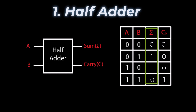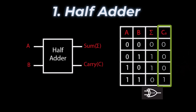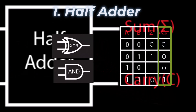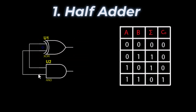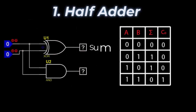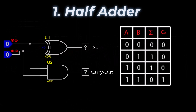By observing the truth table, the sum output is the same as the XOR function, and the carry output equals the AND gate. So a half adder is designed by combining an XOR gate and an AND gate. The inputs of both gates are connected — the XOR gate produces the sum and the AND gate produces the carry out. The Boolean expression is: Sum = A XOR B; Carry = A · B.